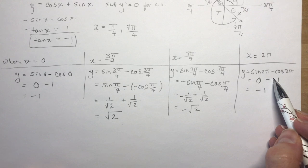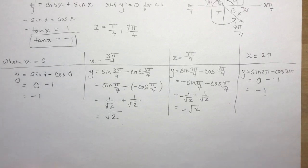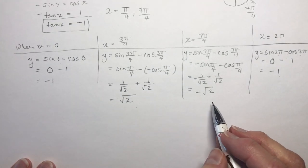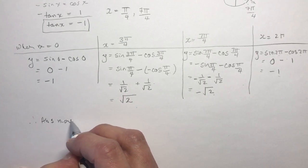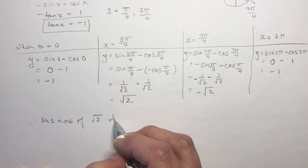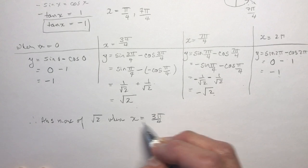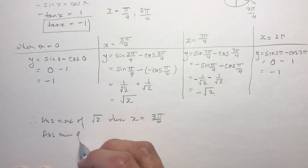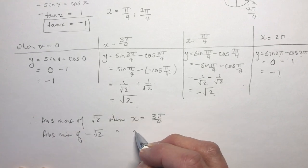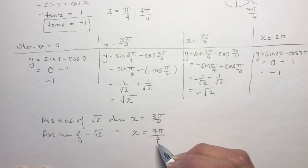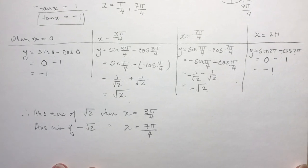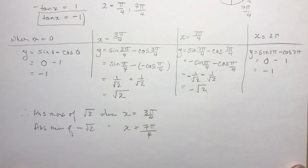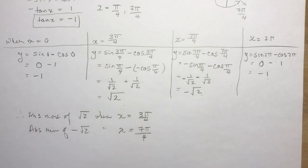Comparing all values: √2 and negative √2 are bigger in magnitude than 1. So the absolute maximum is √2 when x equals 3π/4, and the absolute minimum is negative √2 when x equals 7π/4. That's what you have to do with these problems. I know it looks like a lot of work and it is, but I think you can handle it — once you've seen how it's done, I'm sure you'll understand. Hope that helped; it was a very good question.